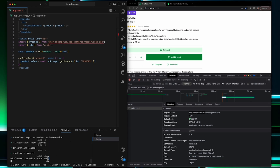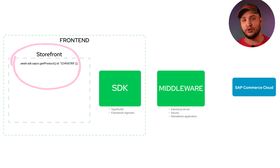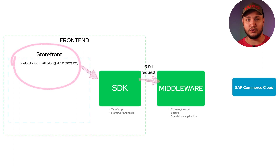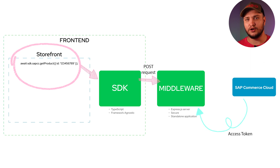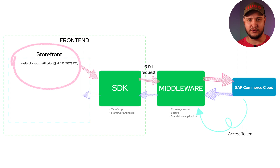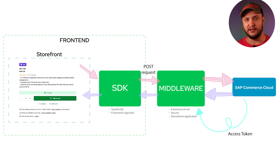Let's take a look at another diagram and go step by step to see the data flow. The request is originated on the client side, then it moves to the SDK. From the SDK, we send a POST request to our middleware. Our middleware already has SAP Commerce Cloud access keys, so it can freely communicate with the platform. It sends all the needed requests to SAP Commerce Cloud and gets the response back. After that, via SDK, it returns the response back to the frontend, where Nuxt.js takes care of the final rendering.